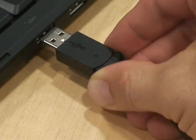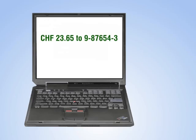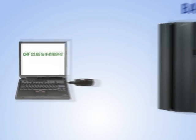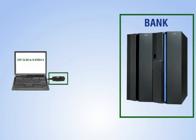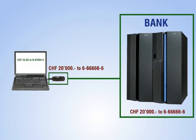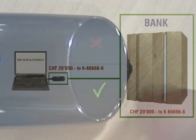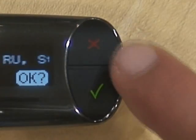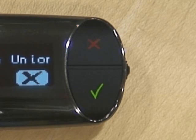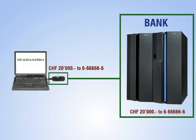By setting up a secure link between a dedicated banking security device and the bank's server, the display of the STIC shows exactly what the banking server sees when making a transaction. Using simple button confirmation, a person can authorize or reject transactions directly over the STIC.